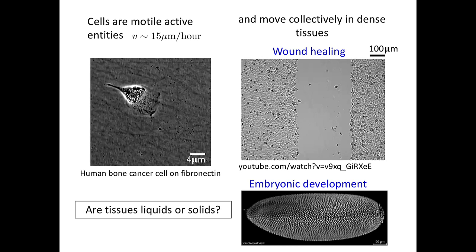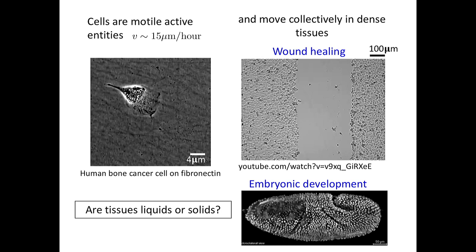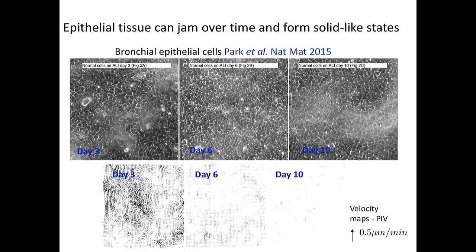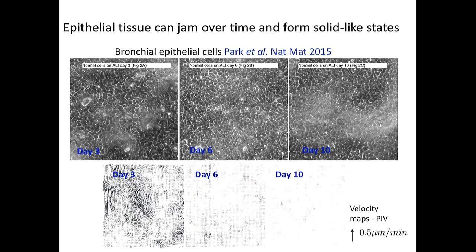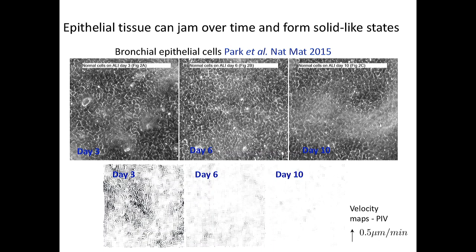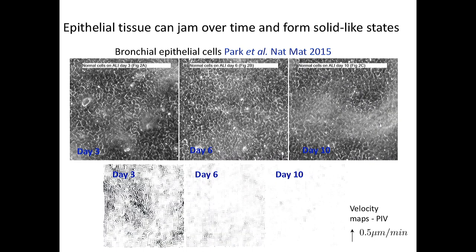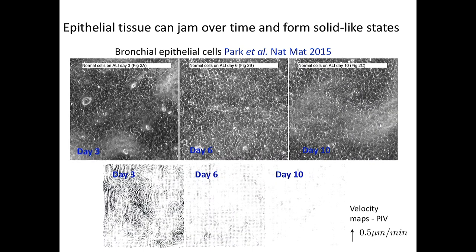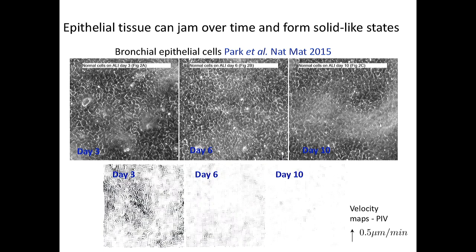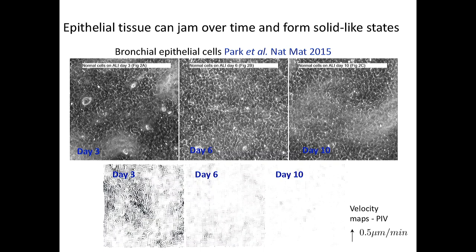Cells will move very differently in these two cases, so one of the questions I want to address is what are the materials properties of tissues and how they are determined by the properties of individual cells. Here is an epithelial tissue—cells from the lung from the group of Jeff Fredberg at Harvard Medical School. As time goes on, from day 3 to day 6 to day 10, this tissue actually jams: cells are moving as in a fluid early on, but eventually, after about a week, they jam into solid-like behavior, highlighted by the individual velocities tracked by particle image velocimetry.